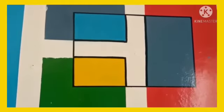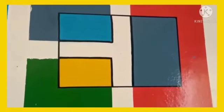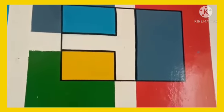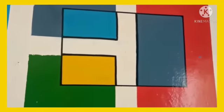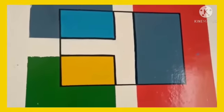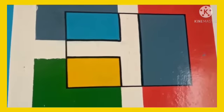And our fourth shape is rectangle. This is a rectangle. It has four sides. It has four sides. Its opposite sides are equal.